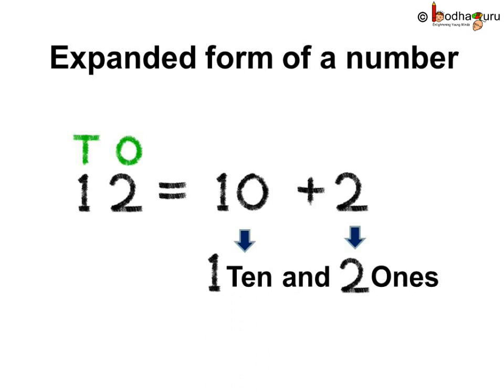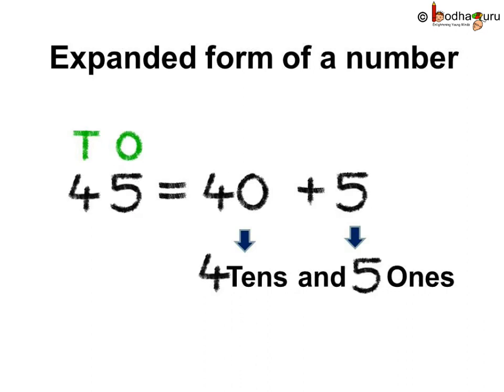Like, 12 has 2 digits, 1 and 2. 12 has 1 ten and 2 ones based on the place value of its digits. Same way, Aman's saving of 45 rupees in expanded form was 40 plus 5 which is 4 tens and 5 ones.